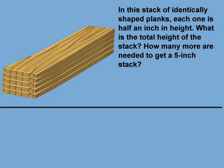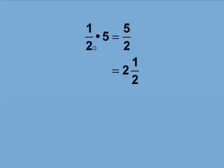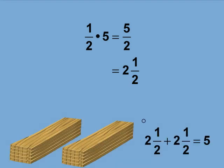The height of 5 half-inch thick planks is represented by this fraction statement. The product is 5 over 2 or 2 and a half, but we want a stack that is 5 inches high, which means another stack of 5 because 2 and a half plus 2 and a half equals 5.